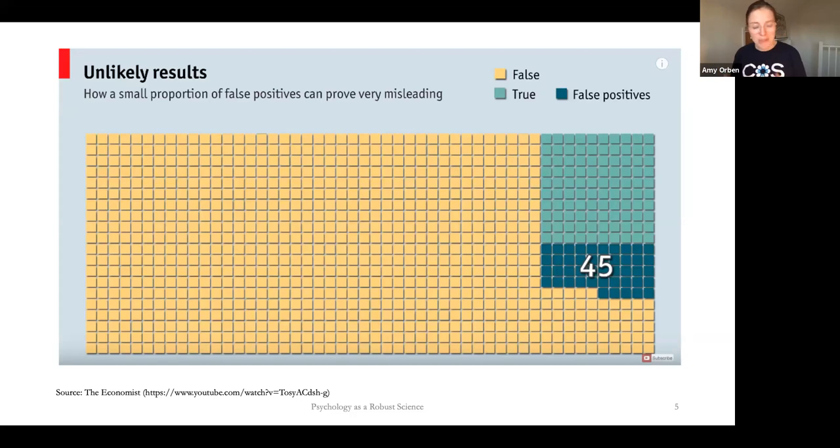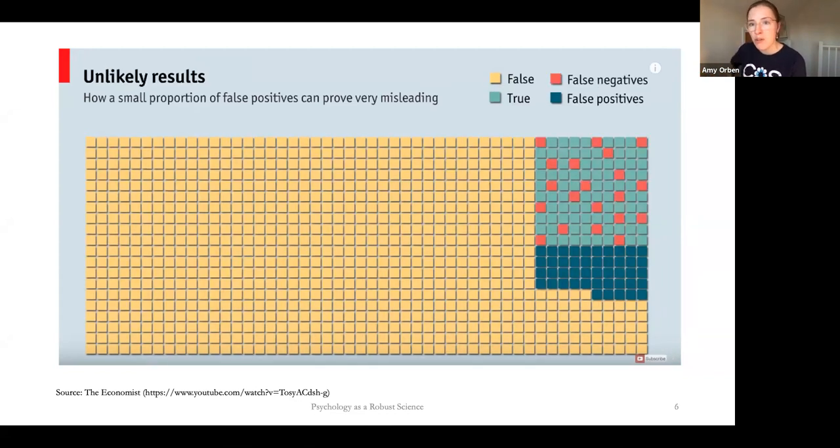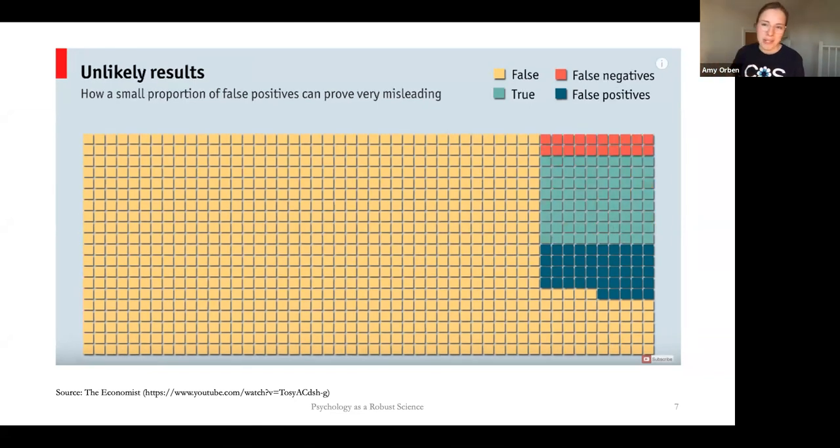But also, we don't just have false positives, we have false negatives as well. And false negatives are a bit harder to understand. It's not just like a p-value of 0.05, because it's to do with power. Maybe we say that we're going to have 80% power. That's a pretty good power study. And by 80% power, we mean that if the effect is true, then we will find that it's true 80% of the time. But that means that in 20% of the time, even though it's true, we will think that actually it's false.